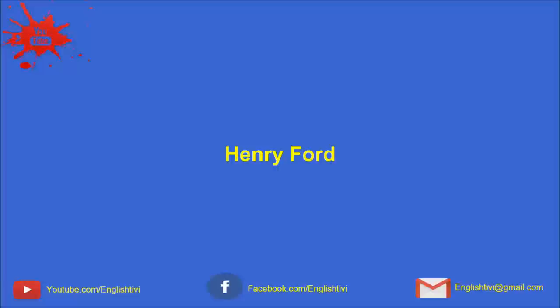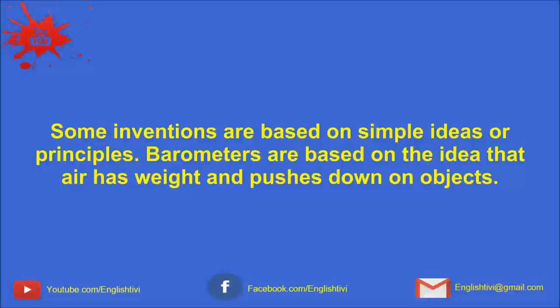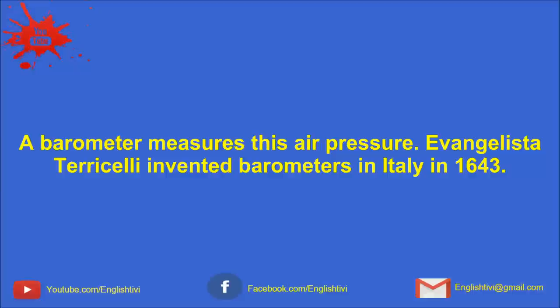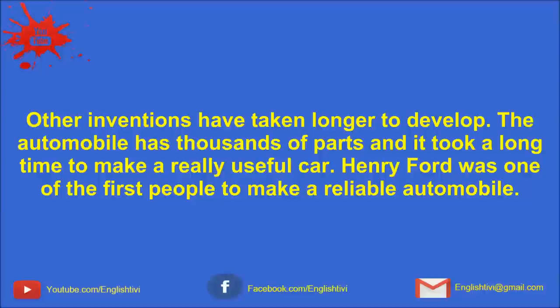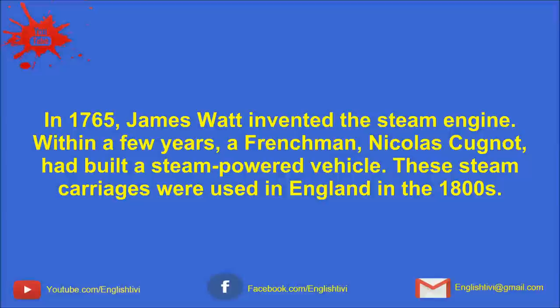Some inventions are based on simple ideas or principles. Barometers are based on the idea that air has weight and pushes down on objects. A barometer measures this air pressure. Evangelista Torricelli invented barometers in Italy in 1643. Other inventions have taken longer to develop. The automobile has thousands of parts, and it took a long time to make a really useful car. Henry Ford was one of the first people to make a reliable automobile. In 1765, James Watt invented the steam engine. Within a few years, a Frenchman, Nicolas Cugnot, had built a steam-powered vehicle.